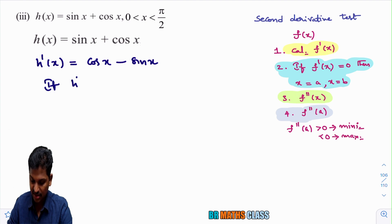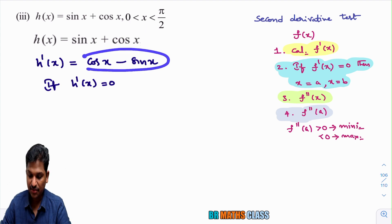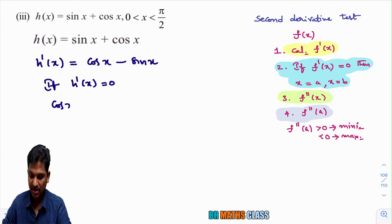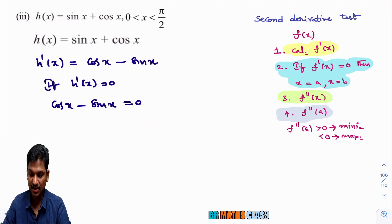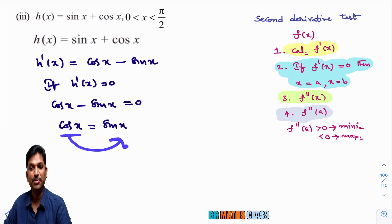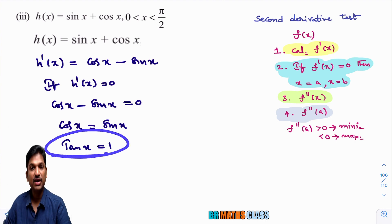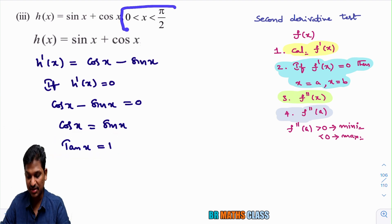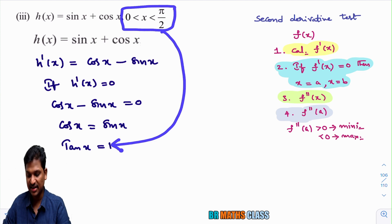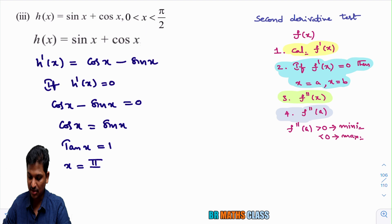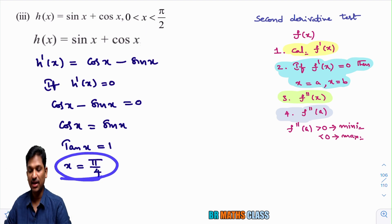Setting h'(x) = 0 gives cos x − sin x = 0. Taking sin x to the right-hand side: cos x = sin x. Dividing both sides gives sin x / cos x = tan x = 1. This is a trigonometric equation with infinitely many solutions. We need x values in the first quadrant (0 to π/2) satisfying this equation. The solution is x = π/4. We got only one x value.